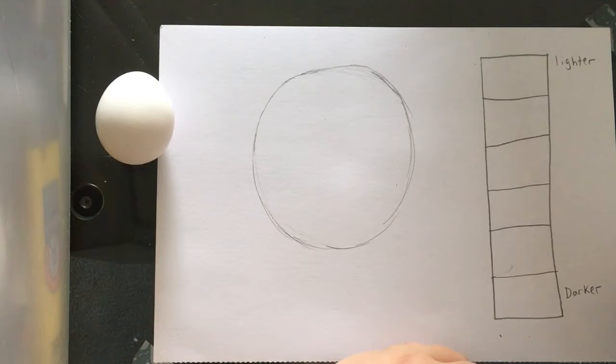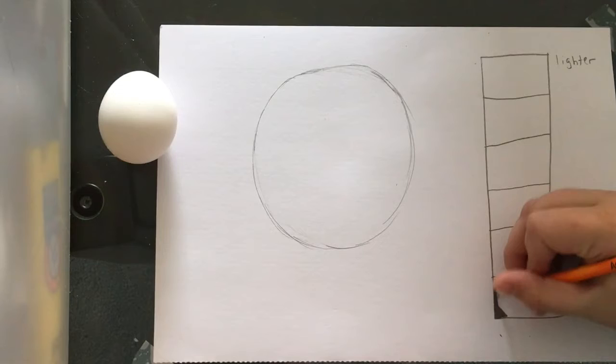Value in art means the lights and darks. The lightest value in this will be white. And the darkest will be as close to black as we can get this graphite pencil to push on the paper.